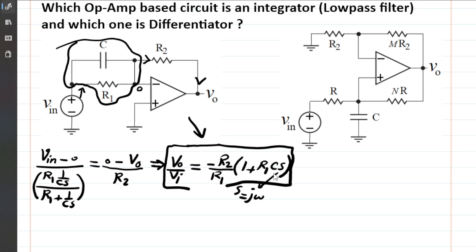When S goes to super high, or frequency goes to super high, then R1·Cs becomes much larger than 1. Therefore this whole transfer function just becomes a coefficient K times S. And that is the signature for what we know as the differentiator.